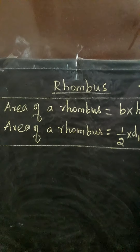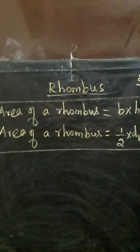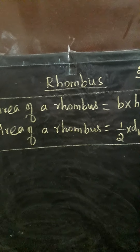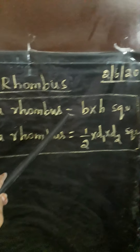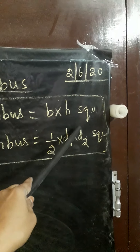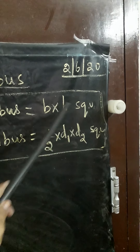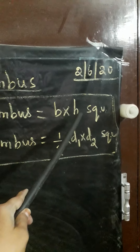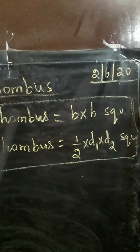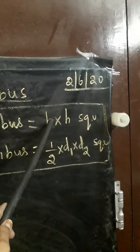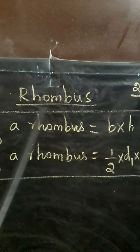Now we see the formula for area of rhombus. Area of rhombus equals B into H square units. Suppose base and height are given, you should find the area using this formula.